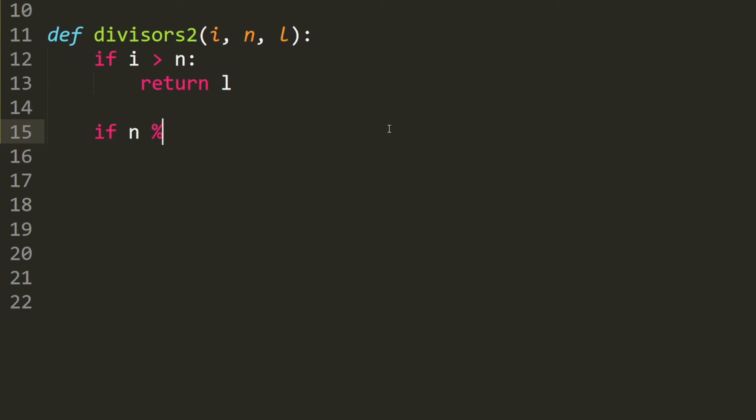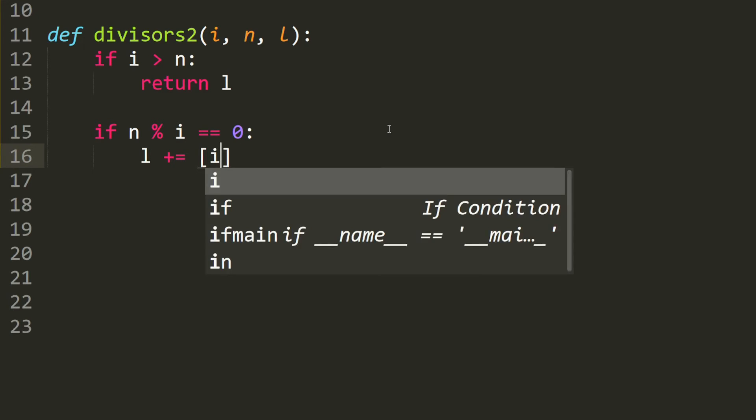If n can divide i, and the remainder is 0, then we basically add i into the list. So l plus equals the list of i.